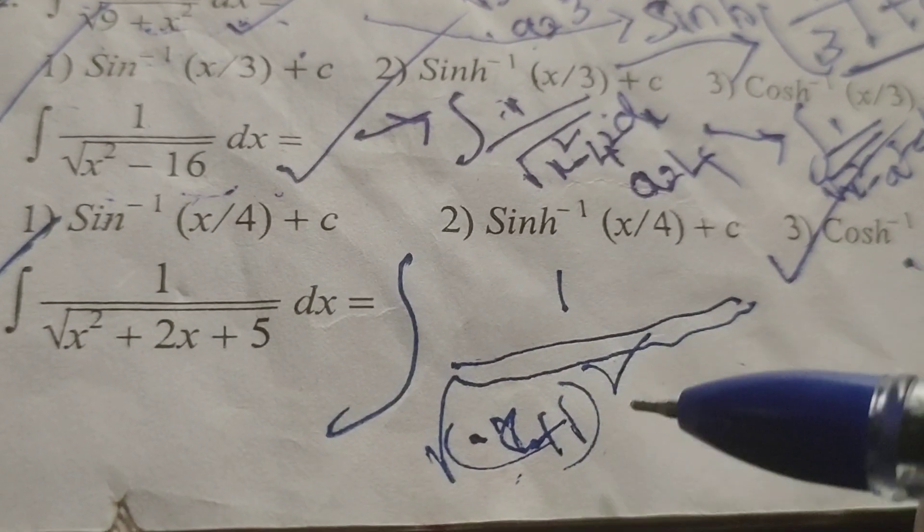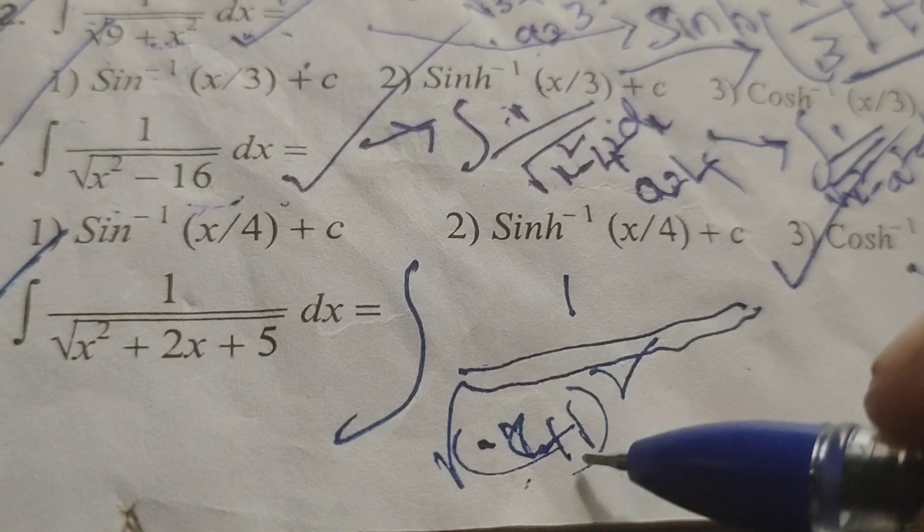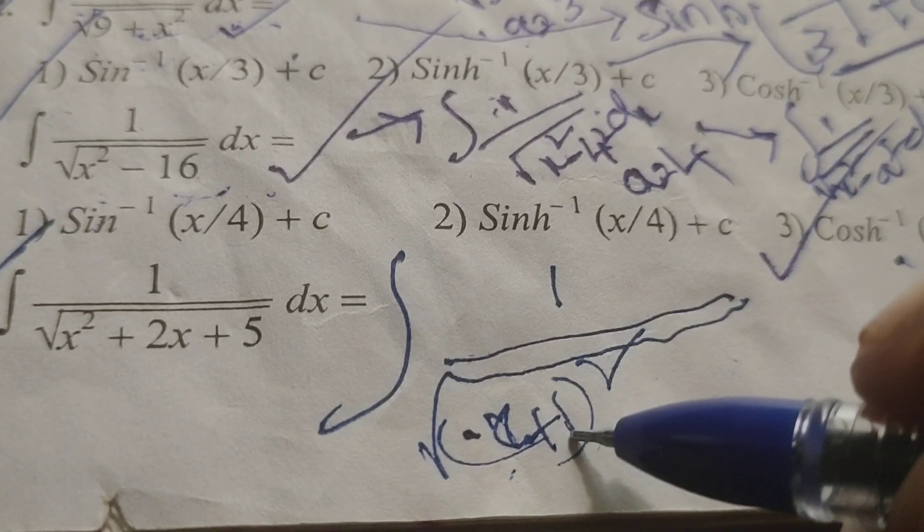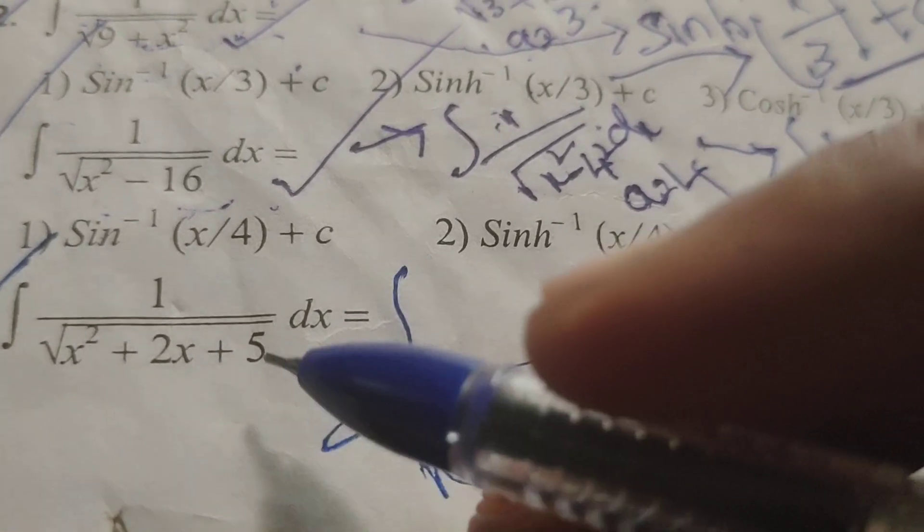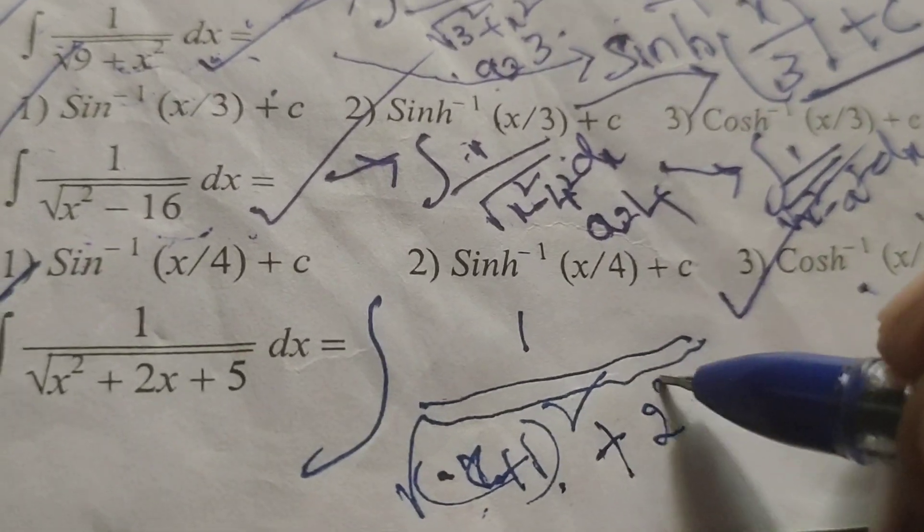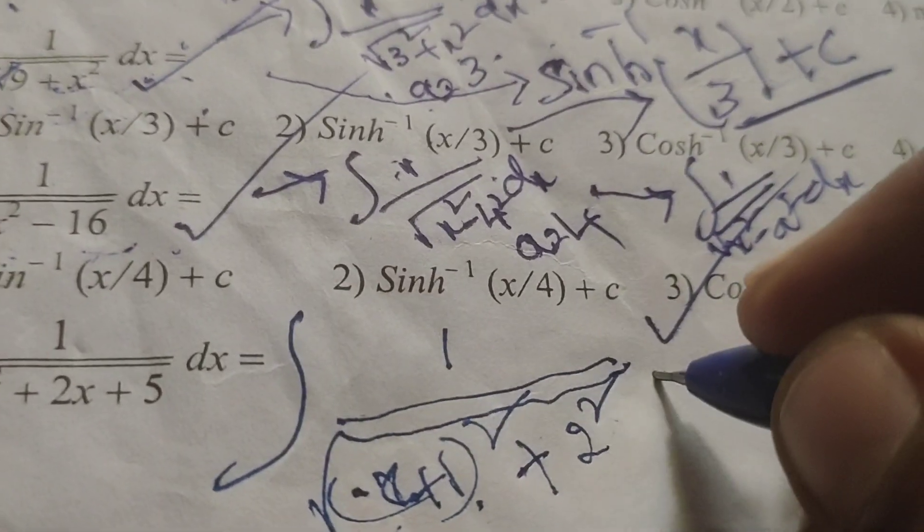That is x square. I mean formulae means a square plus 2ab plus b square: x square plus 2x plus 1. Here 5 is there. Additionally we want here 4, so 4 write 2 square, then into dx.